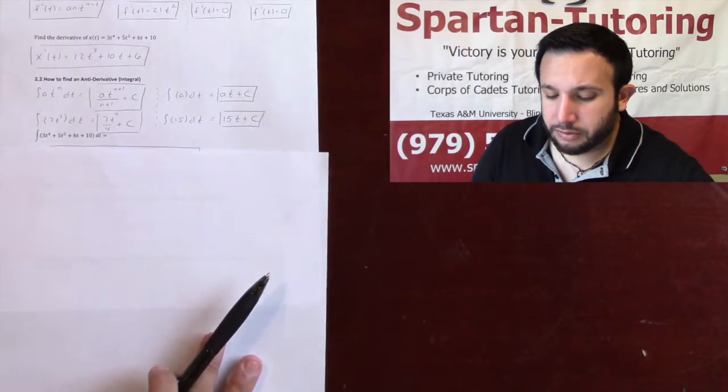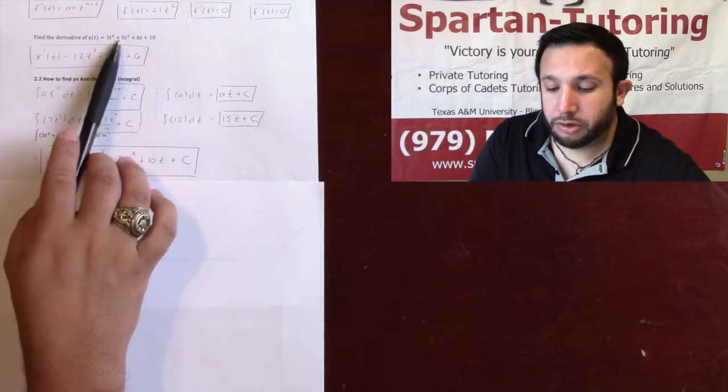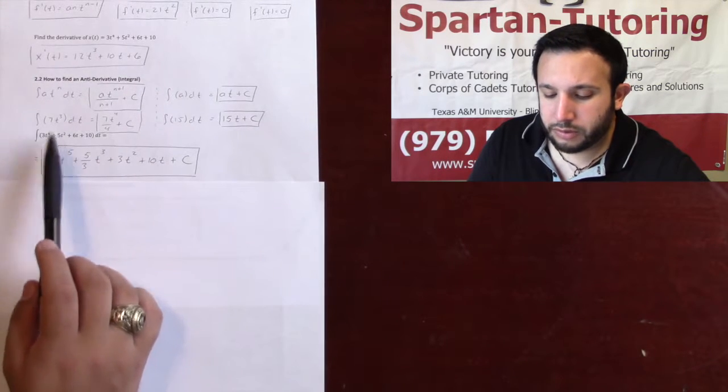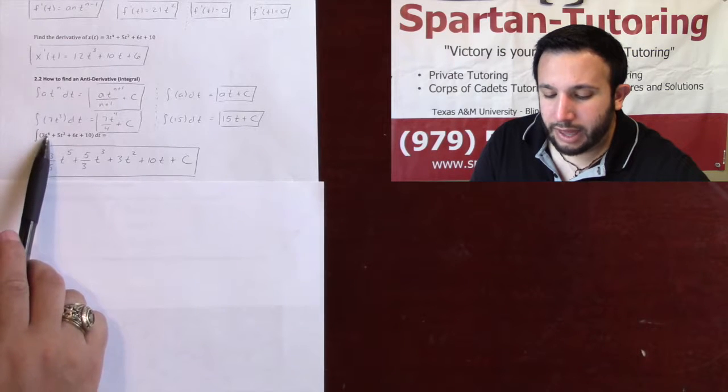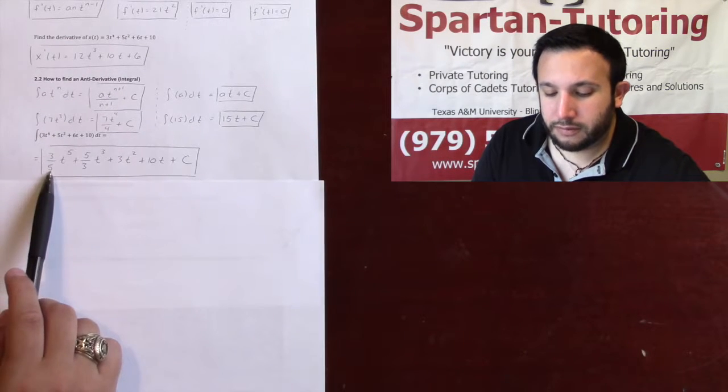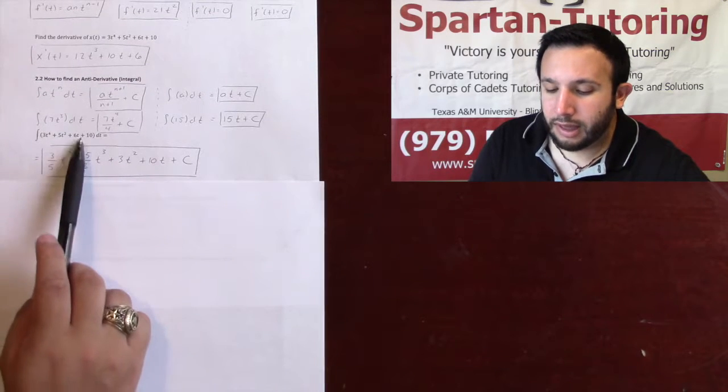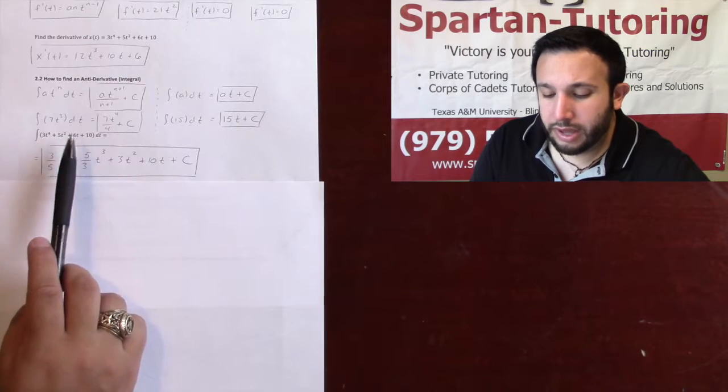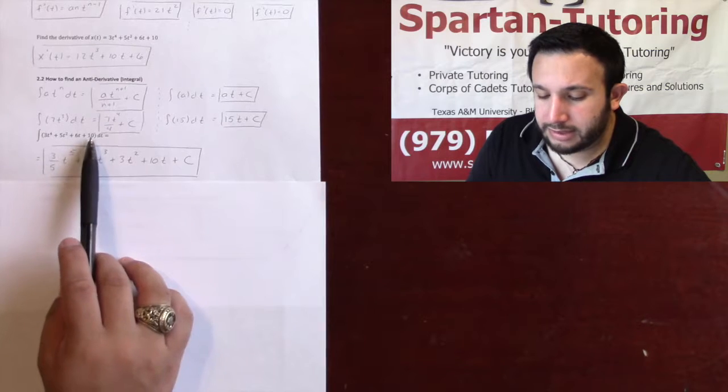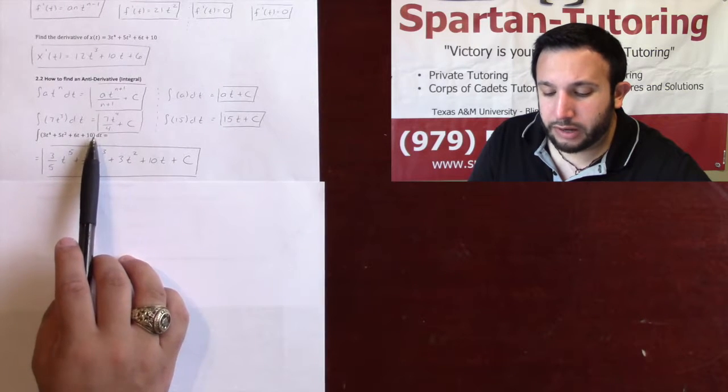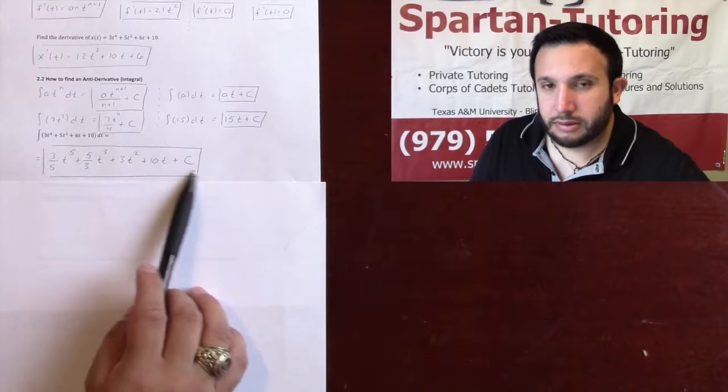So running through an example, let's say that I want to integrate the exact same thing. But now we're going to do the antiderivative of 3t to the 4th plus 5t squared plus 6t plus 10. All I'm doing, adding 1 to the top, that's 5, and dividing. Adding 1 to the top, that's 3, and then dividing. Adding 1 to the top, that's 2, and then dividing. And 6 divided by 2 is 3. Then I take this 10, this number, the integral of any number is just that number times t, and then finally always, plus c.